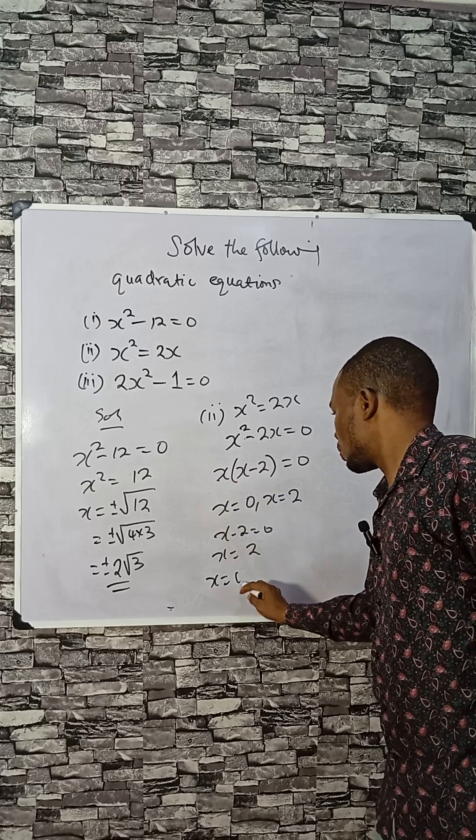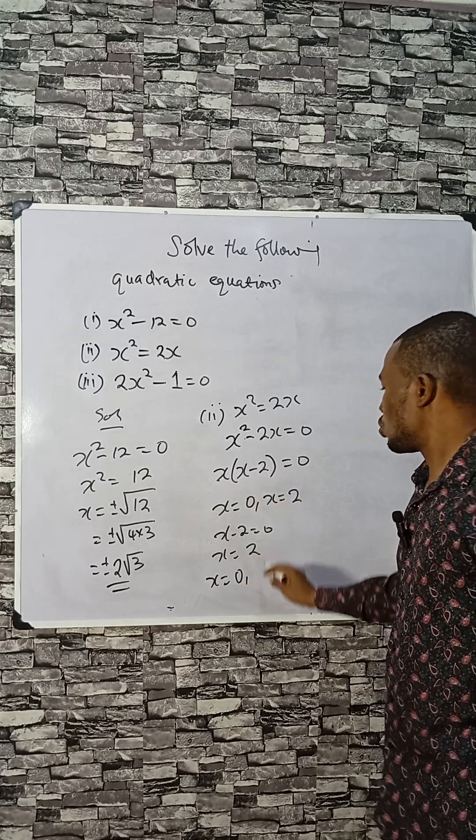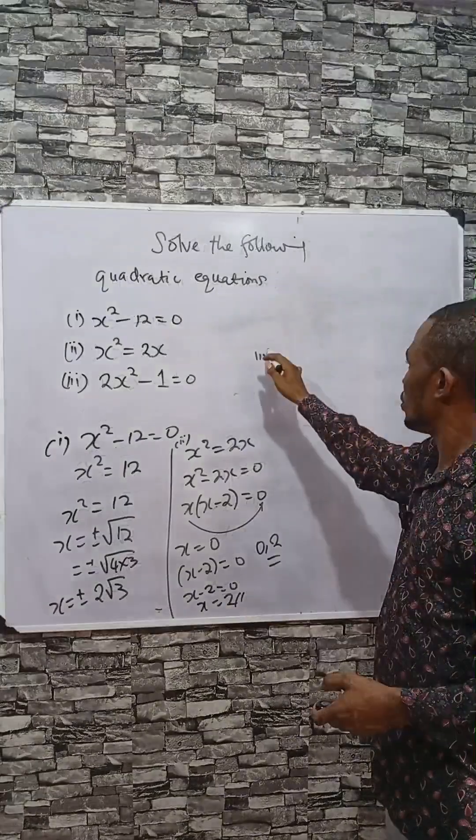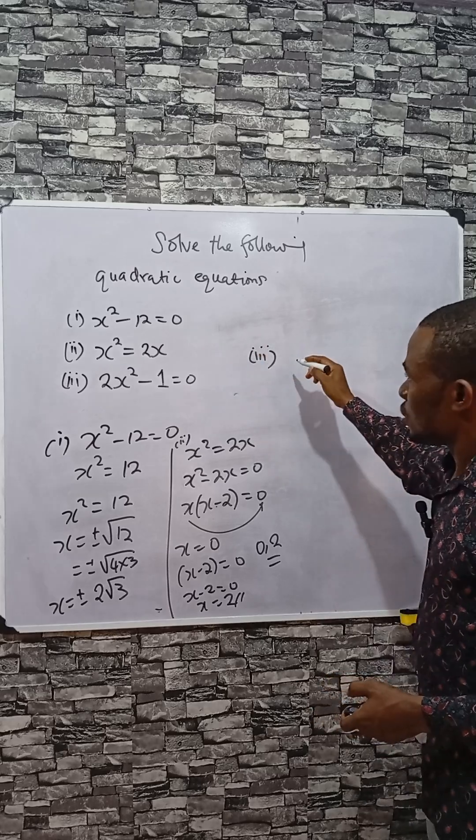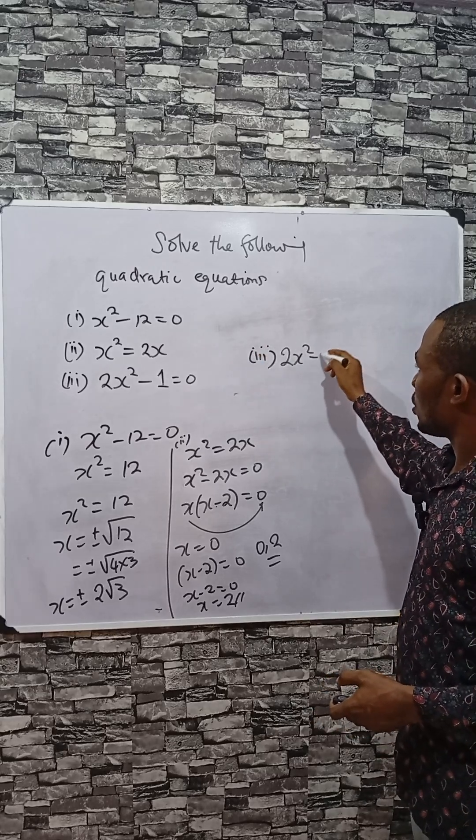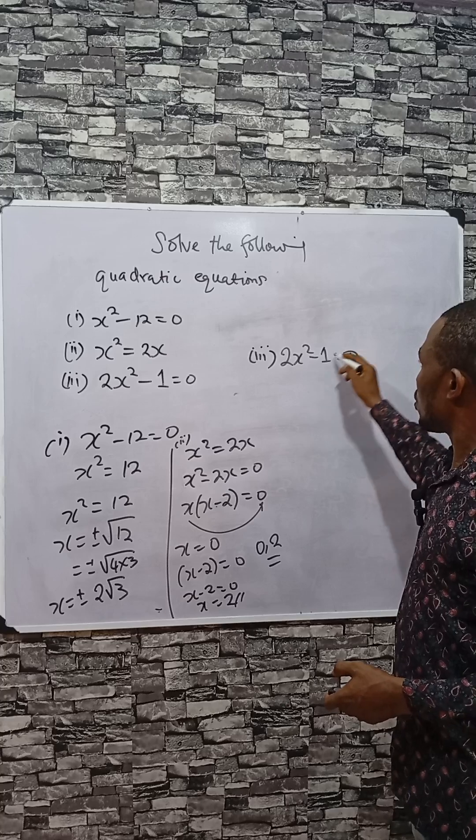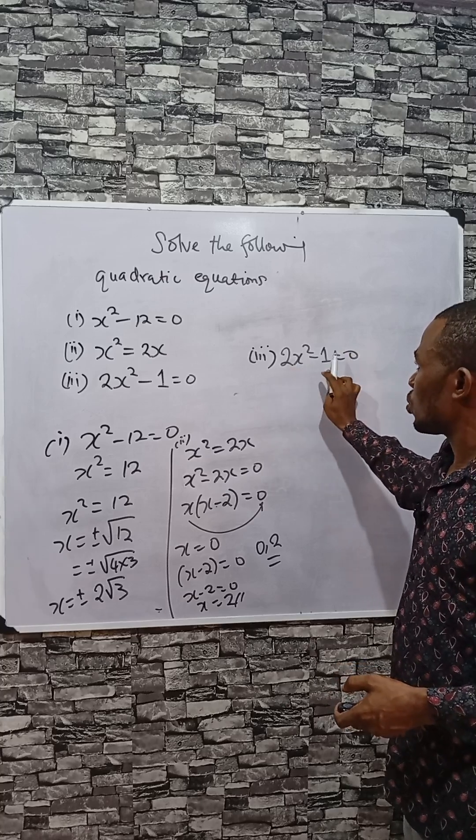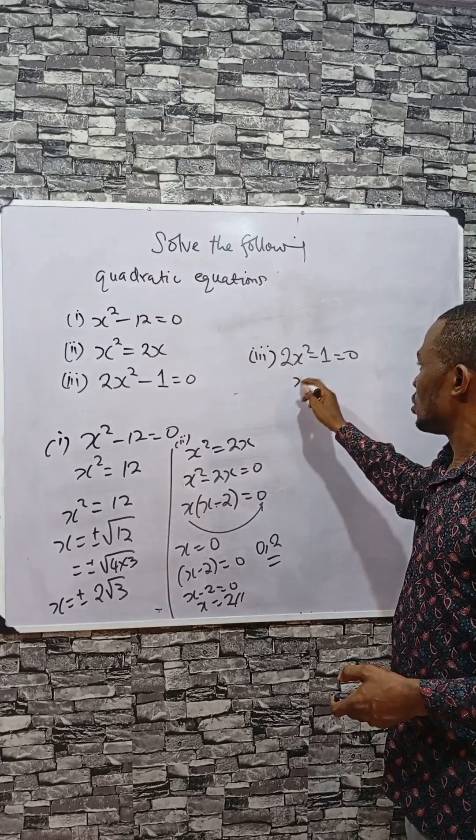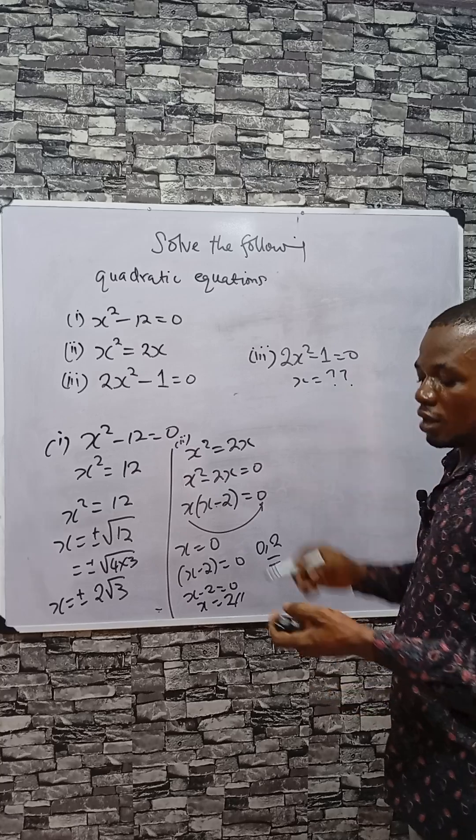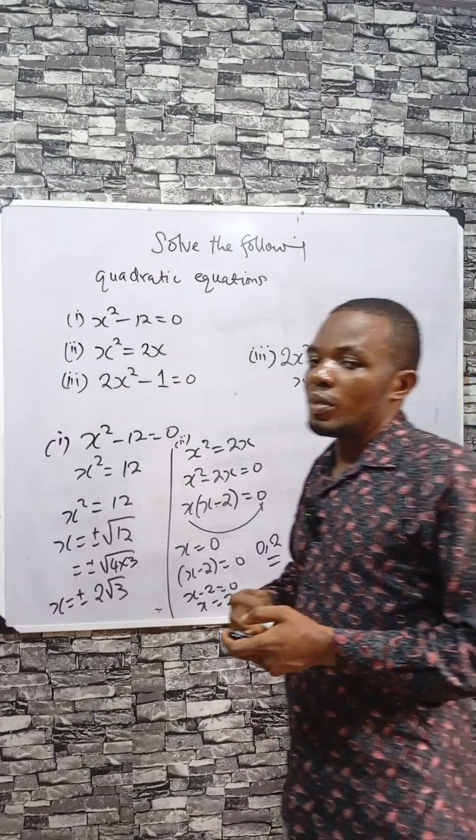for the first factor and 2 for the one in bracket. Now, what is the value of x for 2x² - 1 = 0? Solve for x. What is the value of x? Let's have the answers in the comment section. Bye bye.